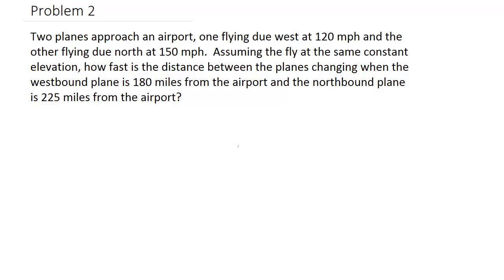Let's look at a related rate problem. We have two planes approaching an airport: one flying due west at 120 miles per hour and the other flying due north at 150 miles per hour. Assuming they fly at the same constant elevation, how fast is the distance between the planes changing when the westbound plane is 180 miles from the airport and the northbound plane is 225 miles from the airport?